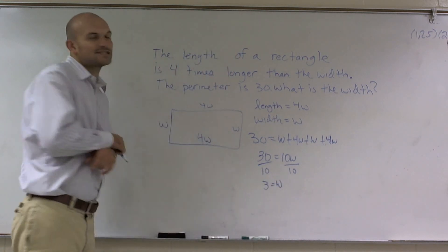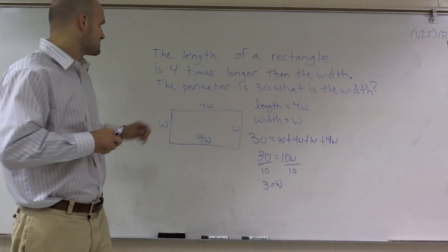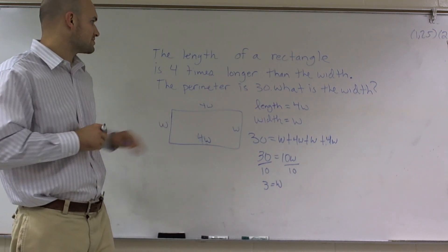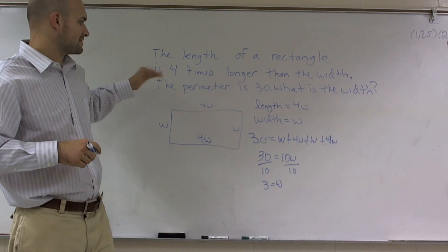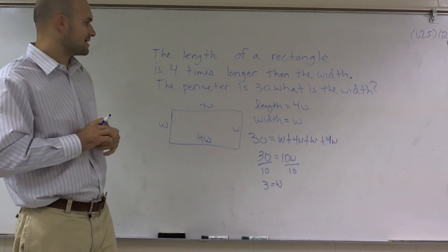Now, that is not the answer—wait, it says the perimeter is 30, what is the width? So it says the length of the rectangle, actually never mind, that is what we're looking for.